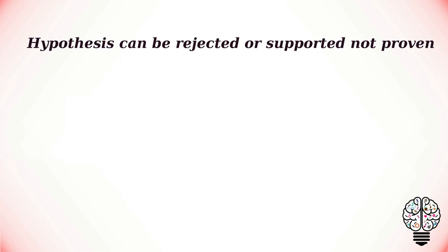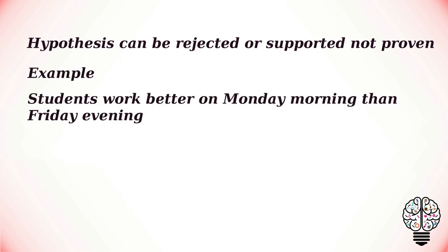To answer the question — can a hypothesis be proven? — it depends upon the analysis of the results. An alternative hypothesis can be rejected or supported, but it can never be proven to be correct. We must avoid any reference to results proving a theory, as this implies 100% certainty, and there is always a chance that evidence may exist which could refute a theory.